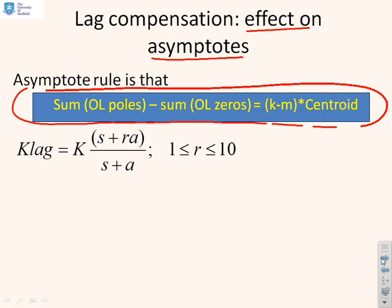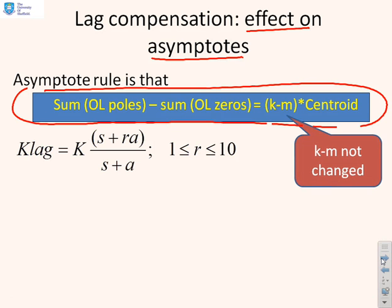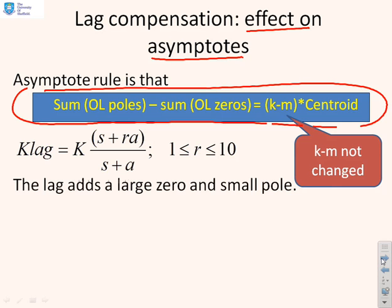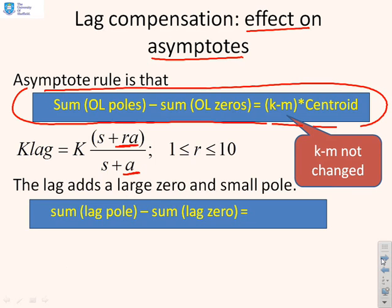Where is the centroid of the asymptotes given by the sum of the open loop poles minus the sum of the open loop zeros equals (K minus M) times the centroid? Well, first of all, we notice that K minus M has not changed because we've added one zero and one pole. The lag adds a large zero, there it is, and a small pole. So those are RA and A. If we put just those two terms into the formula, we're going to get the pole minus A, and then minus minus RA. So this is the change we get to the sum of the open loop poles and the sum of the open loop zeros.